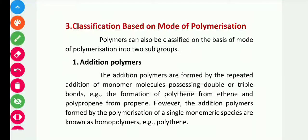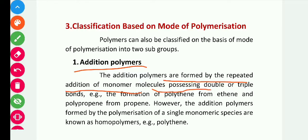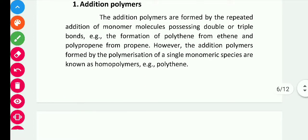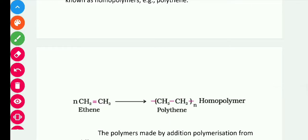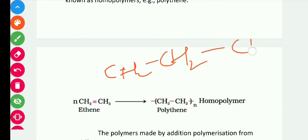Addition polymers are formed by repeated addition of monomer molecules possessing a double or triple bond. As I already told you, a monomer is the repeating unit of the polymer — the smaller part that repeats in the chain. For example, ethene has a double bond, and by the repeated addition of ethene molecules, they join to make a polymer called polyethene.